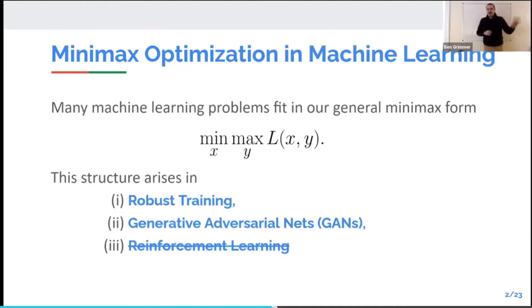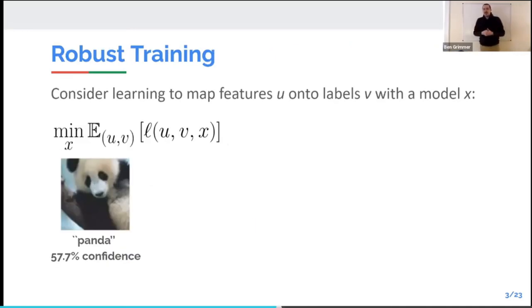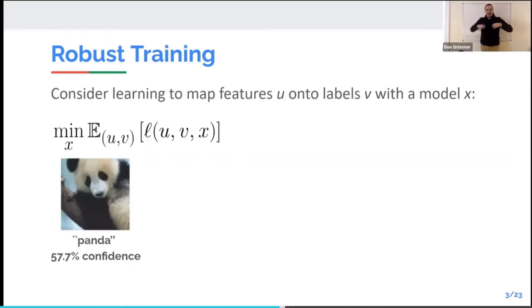I want to look at a few machine learning problems that fit this general form of minimizing and maximizing a generic function L of X and Y. I'm going to think about robust training — getting more stable, adversarially resistant solutions — and generative adversarial nets. In the classic machine learning setting, we have some feature vector U and a label V. Here a picture of a panda, and we want to train a model — maybe X is the parameters in a neural network — so that we assign high confidence to the correct labels across our dataset.